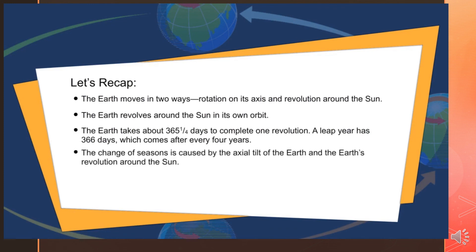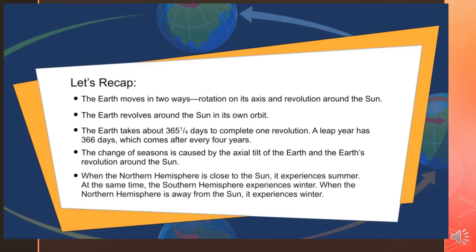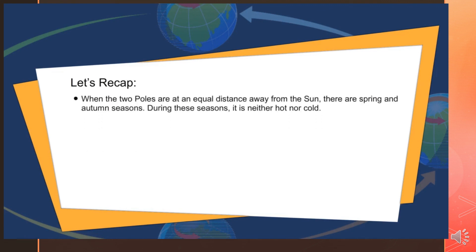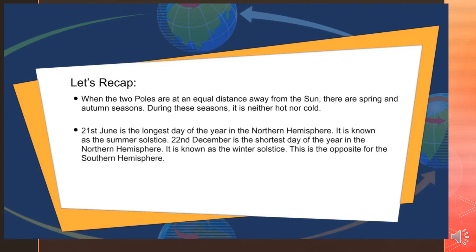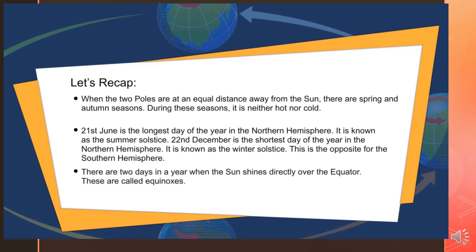The change of seasons is caused by the axial tilt of the earth and the earth's revolution around the sun. When the northern hemisphere is close to the sun, it experiences summer; at the same time, the southern hemisphere experiences winter. When the two poles are at an equal distance away from the sun, there are spring and autumn seasons — it is neither hot nor cold. 21st June is the longest day, known as the summer solstice, and 22nd December is the shortest day, known as the winter solstice. There are two days in a year when the sun shines directly over the equator — these are called equinoxes.